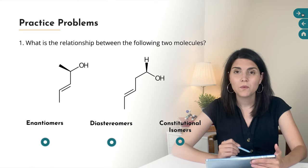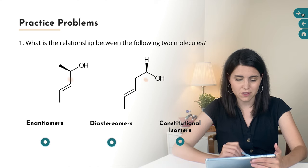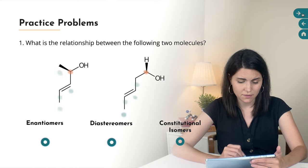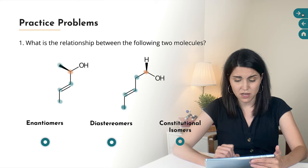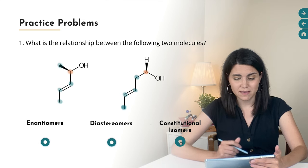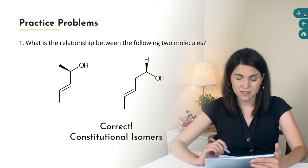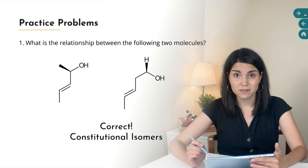The third problem: what's the relationship between the following two molecules? This one is trying to trick us by drawing our attention to the top carbon, which is a chirality center in both cases. But if we really look, the right-hand molecule has a chain of five carbons with the OH on the second carbon. And in the other molecule, we've also got five carbons in a chain, but the OH is on the first carbon. So they are constitutional isomers — they're connected differently. The OH is on a different carbon in either case, so it doesn't matter what the stereochemistry of those chirality centers are. They're actually different molecules — constitutional isomers.